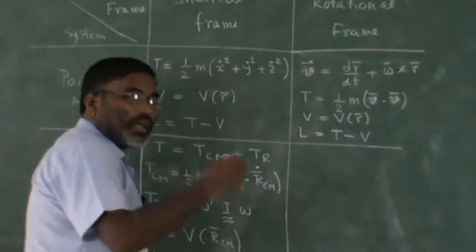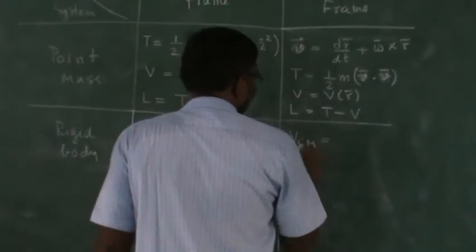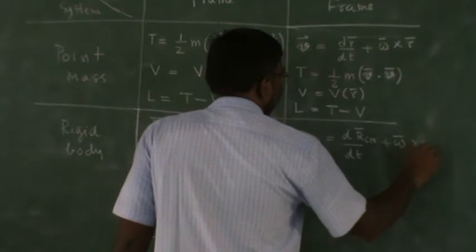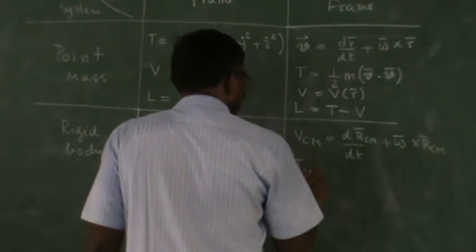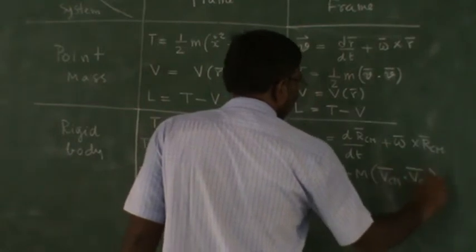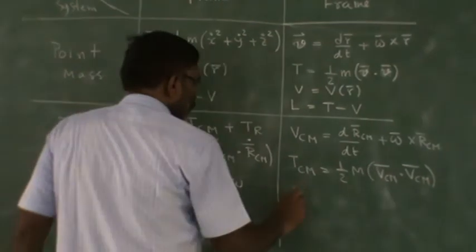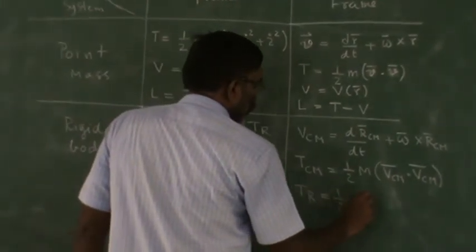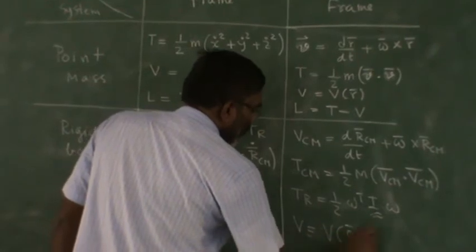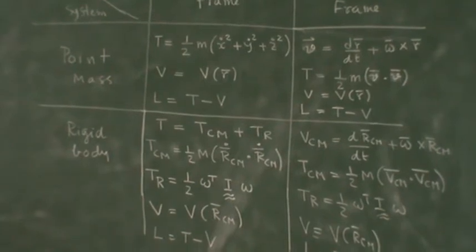If you have a rigid body in a rotational frame, then you must calculate V_CM as dR_CM/dt plus omega cross R_CM. And then calculate T_CM as half m V_CM dot V_CM. Just like how you have a rigid body. So this is the four types of problems.